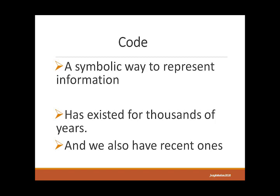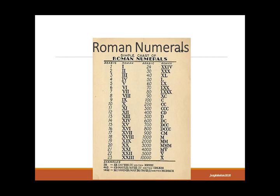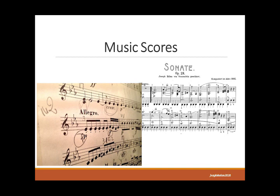Some of the codes we know of are the Egyptian hieroglyphics, the Greek alphabet, the Roman numerals, and recently we have music scores, since we have switched from the traditional, which is oral in nature, to the music sheets that are generated by musicians. The genetic code, to know which traits you have inherited from your parents.